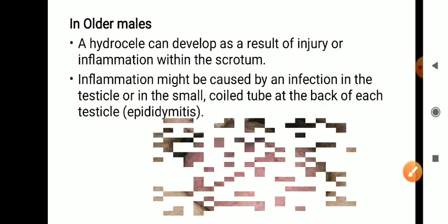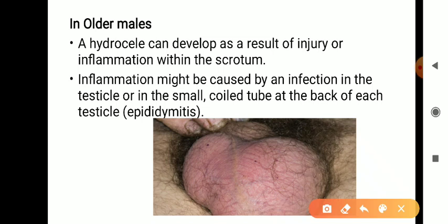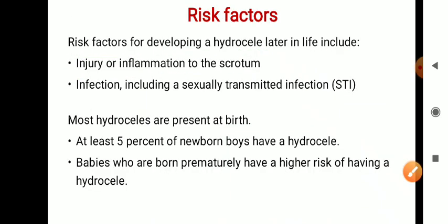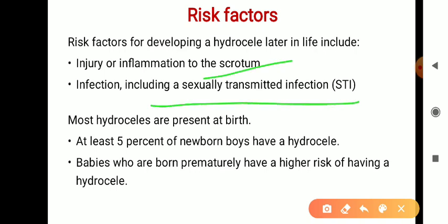In older males, hydrocele results mainly from injury or inflammation in the scrotum. Inflammation can be caused by a testicular infection, a sexually transmitted infection, torsion of the cord, vas deferens issues, or epididymitis. Risk factors include injury or inflammation to the scrotum, infection including sexually transmitted infections, and babies who are born prematurely also have a high risk of having a hydrocele.